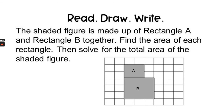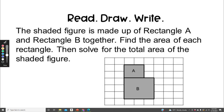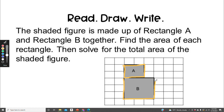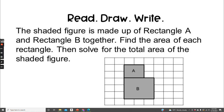It's your turn to practice using the Read-Draw-Write question. We'll read the question together, and then you will find the answer and write your sentence on your own. When you're certain of the answer, look in the description box below to check your answer against the correct answer. The shaded figure is made up of rectangle A and rectangle B together. Find the area of each rectangle, then solve for the total area of the shaded figure. Find the area of rectangle A, then find the area of rectangle B. When you add them together, you'll get the area of the shaded figure. Pause the video here, do your very best work, check your answer in the description box, and I'll see you in the next lesson.